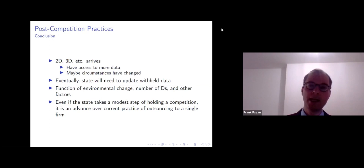So we're more or less ambivalent. We just recognize that it will need to be done. And how often the state will need to update the data will be a function of how quickly the environment changes. So you could imagine, for instance, in a recidivist context, perhaps some new technology, new tracking technology, like an ankle bracelet arrives, and it's able to track people who are released. So we see recidivism drop even with higher release rates. And so that data will need to be updated over time with environmental change, also with respect to the number of defendants who come and perhaps other factors too. But the main point, and what we argue is that even if the state takes a modest step of holding a competition, that this is an advance over current practices, like in Wisconsin, where they're just simply outsourcing to a single firm.